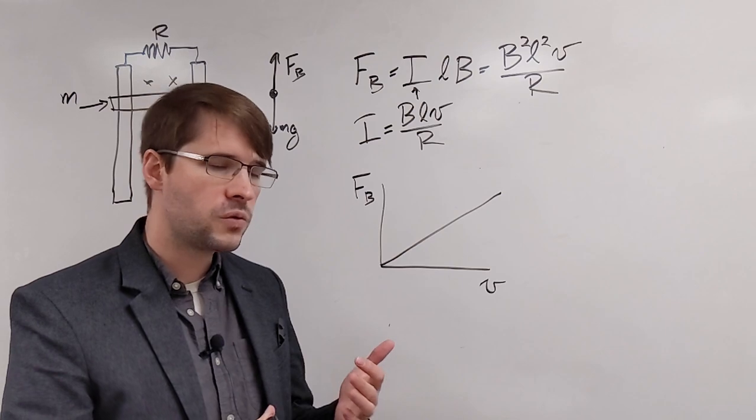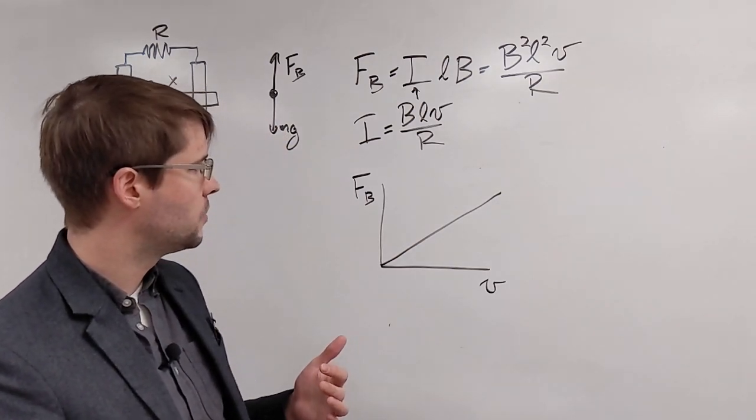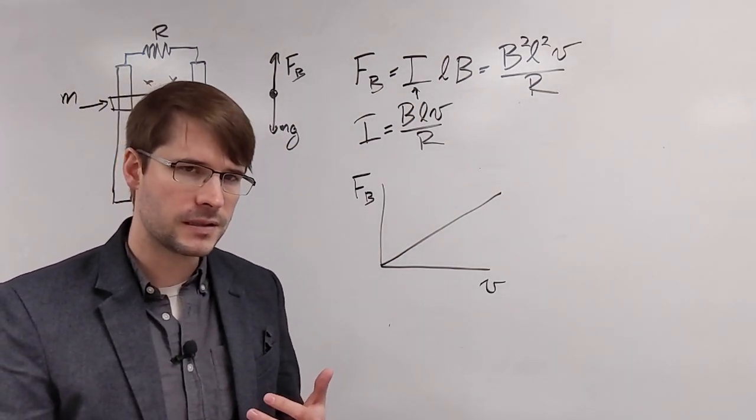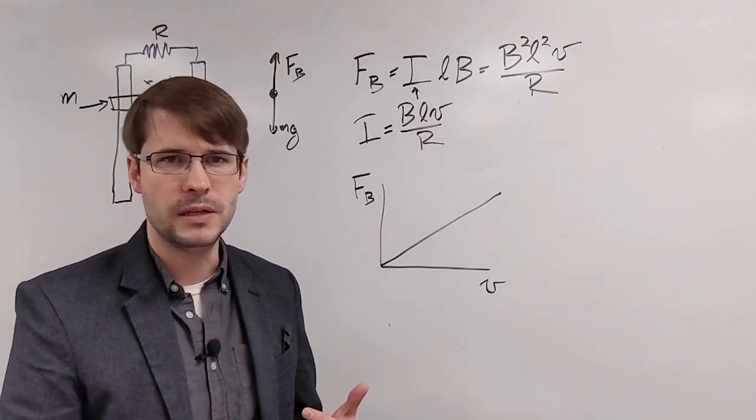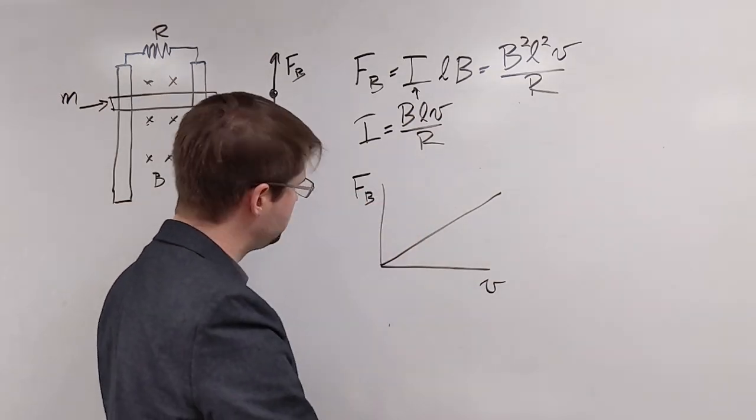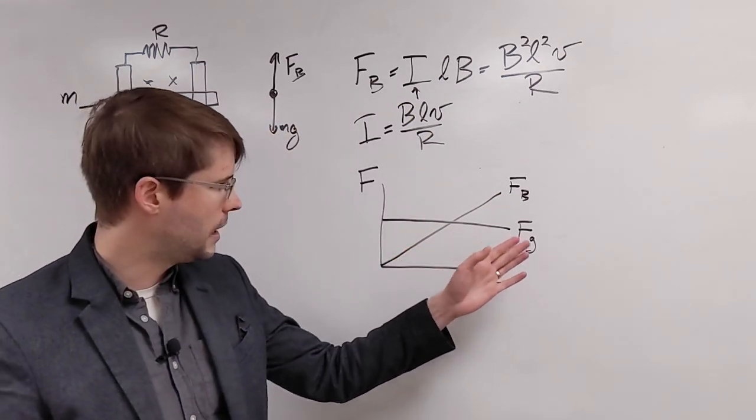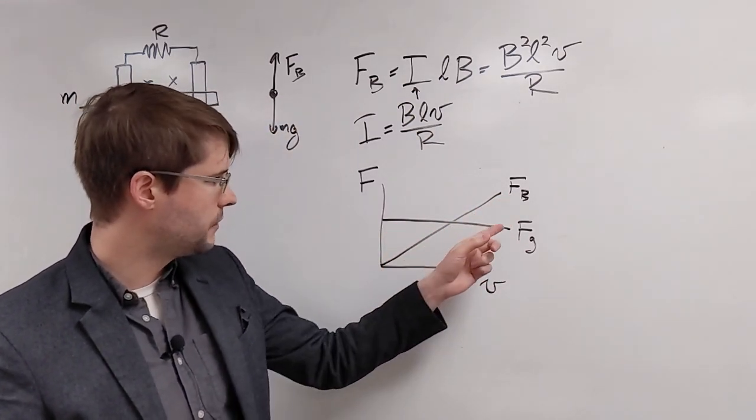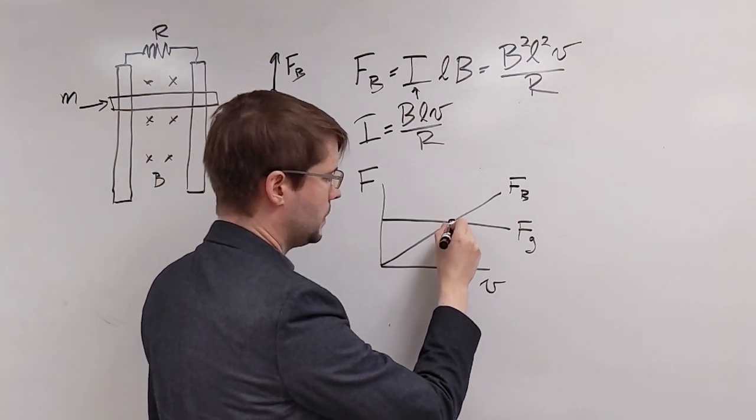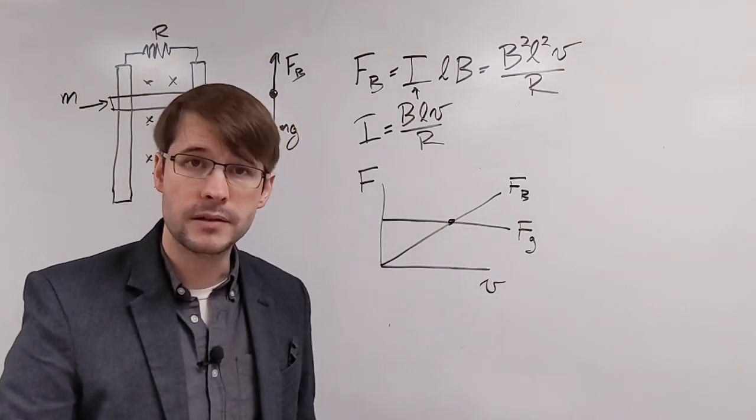So somewhere in between, we get a point where the magnetic force is equal to the weight, the gravitational force. So if now we have a graph with the magnetic force here and the gravitational force there, at this velocity, the two forces would be equal.